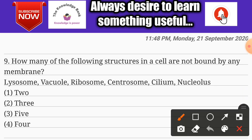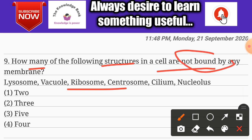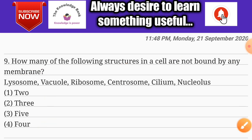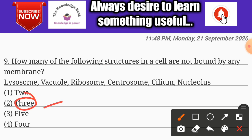Question number nine: how many of the following structures in a cell are not bound by any membranes? Structures listed are lysosome, vacuole, ribosome, centrosome, and cilium. The correct answer is three.